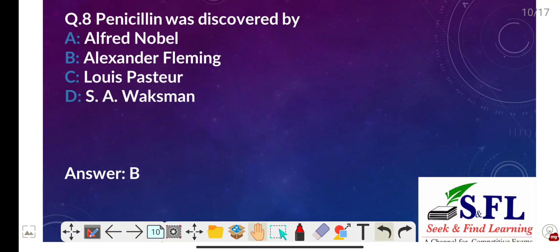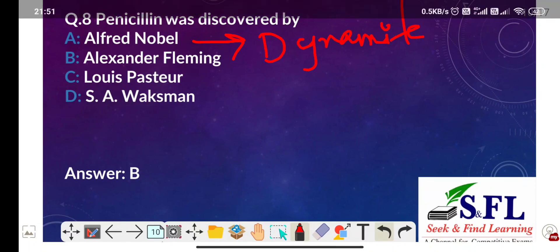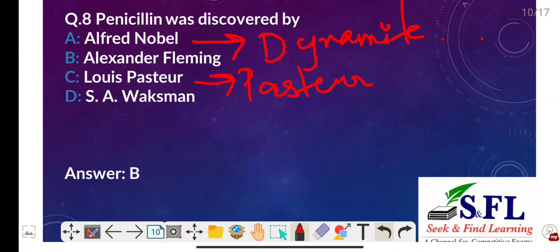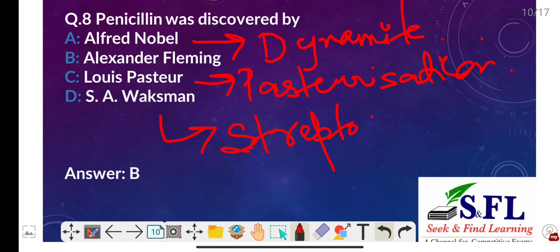Question number eight: Penicillin was discovered by — the options are Alfred Nobel, Alexander Fleming, Louis Pasteur, and SA Waksman. Alfred Nobel is recognized for inventing dynamite. Louis Pasteur is recognized for pasteurization. SA Waksman is recognized for the discovery of streptomycin. Alexander Fleming was a Scottish physician and scientist recognized for discovering penicillin, so the correct answer is option B, Alexander Fleming.